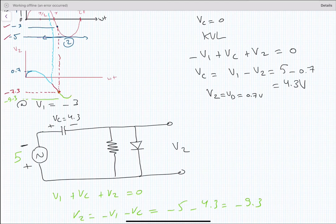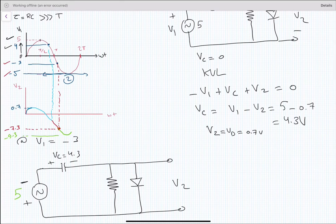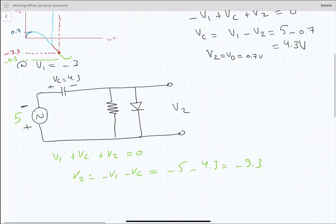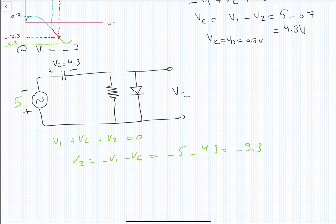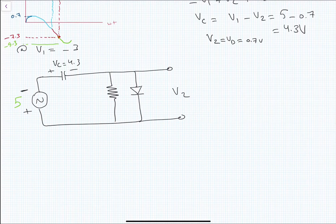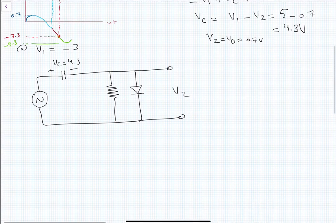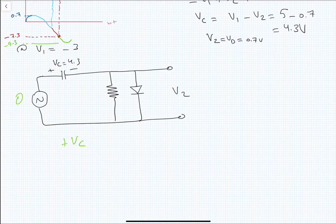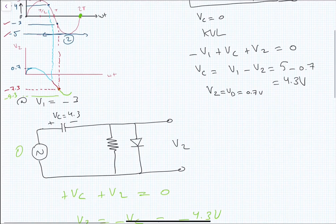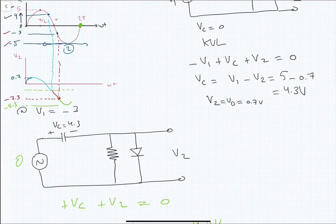I will take the last point at 2π where the input is 0. At V1 = 0 volts, a 0-volt source is a short circuit. Applying KVL: VC + V2 = 0, so V2 = −VC = −4.3 volts. So V2 = −4.3 volts at this point.